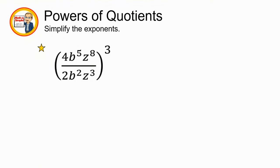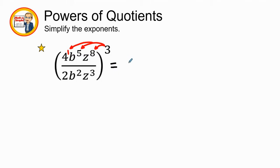In simplifying exponents using the power of quotients rule, we remember that the general rule is to distribute the outside exponent into every part of the expression in the numerator and in the denominator. When exponents are on the inside we are going to add them together, but when you have a power to a power rule, we multiply our exponents together.